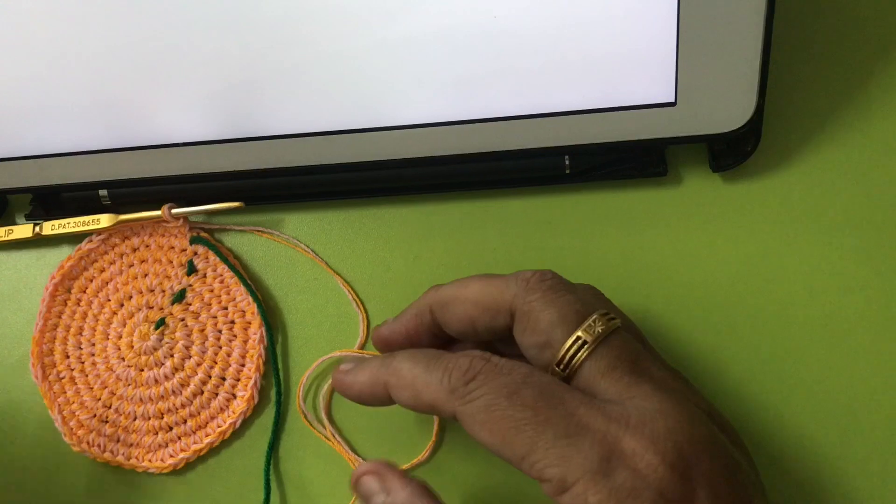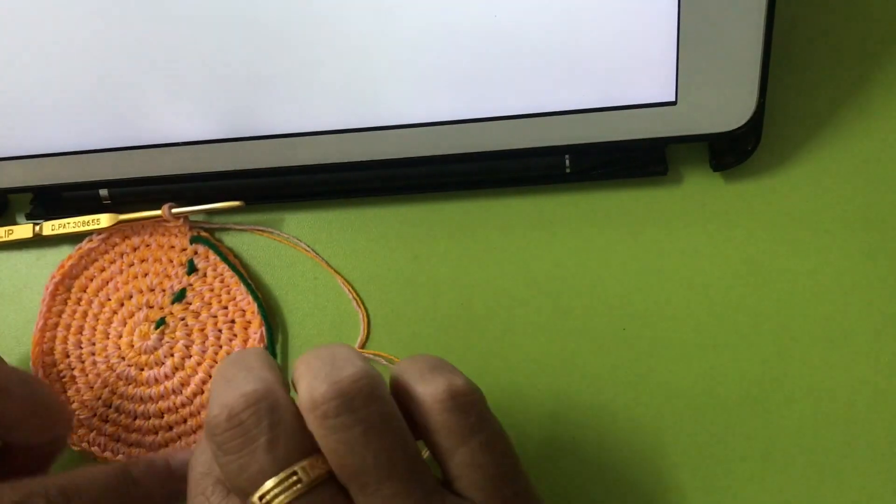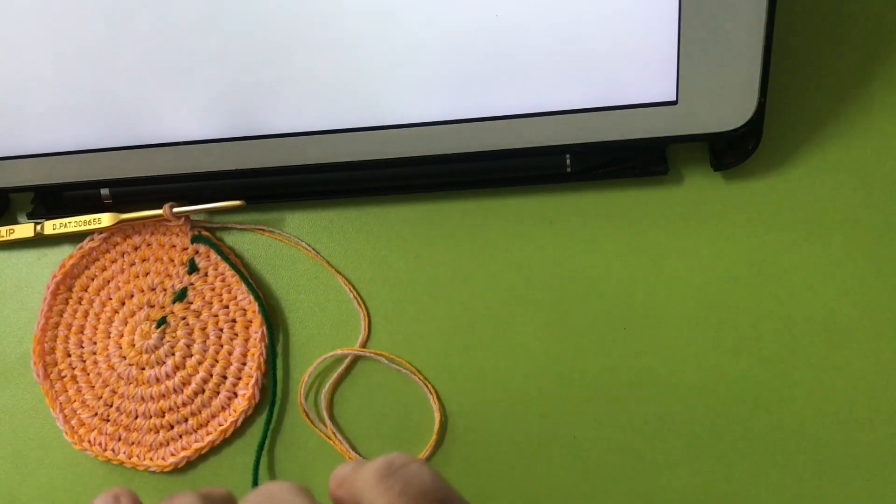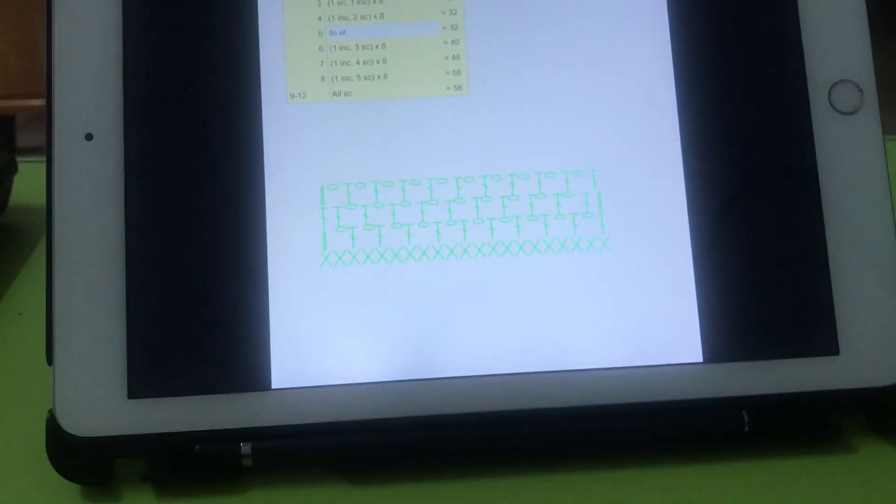The others are four more rows, all single crochet, four more rows. Done, four rounds already.